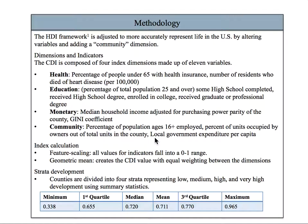The direction of each indicator is adjusted so that larger numbers reflect higher development and opportunity in counties. Feature scaling is implemented so that all values for a particular indicator fall within a 0 to 1 range. The CDI is the geometric mean of the dimension scores, and each dimension is equally rated.